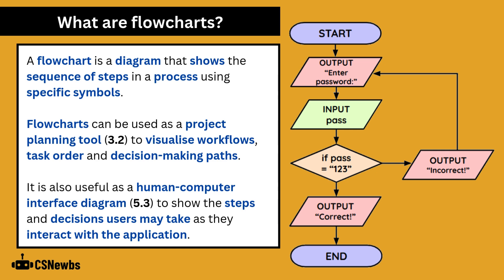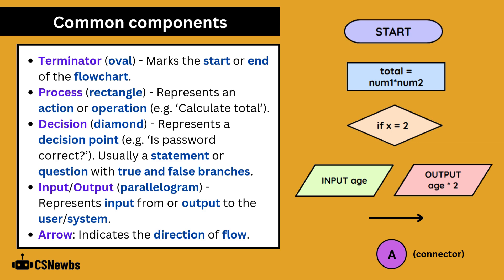It is also useful as a human-computer interface diagram in section 5.3 to show the steps and decisions users may take as they interact with the application. There are several standard shapes used when creating a flowchart, starting with a terminator, which is an oval marking the start or end. Process is represented using a rectangle, which shows an action or operation. Decision points are represented using diamonds, which are usually statements or questions with true and false branches.